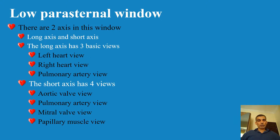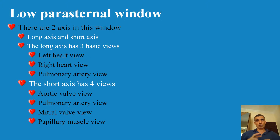Now we'll talk about the low parasternal view. You have basically two axes: the longitudinal axis and the short axis. In the longitudinal axis, we have three views: the left side view, the right side view, and the pulmonary artery view. In the short axis, we have the aortic valve view, the pulmonary artery view, the mitral valve view, and the papillary muscle view.